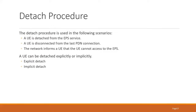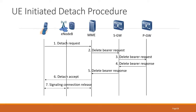The detach procedure is similar to the attach procedure. In 2G/3G we have a detach procedure; in 4G as well it is used to detach from the EPS services, disconnect from the LTE connection, and you cannot access the EPS. It can be explicit or implicit detach, and it can be UE-initiated, MME-initiated, or HSS-initiated. The UE sends a detach request; since you have an existing bearer in 4G, it will send a delete bearer request to the SGW.